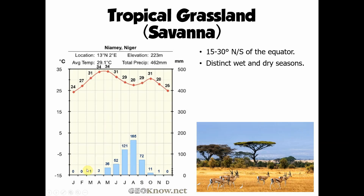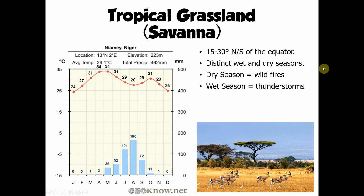Looking at the climate graph for a location in Niger in Central Africa, we can see that in November, December, January, February, March, and April there's almost no rain — a distinct dry season of about five or six months. During those months, wildfires can be quite common because the vegetation dries out and sets alight easily. Then moving into June, July, August, and September, we see rainfall returning — counterbalancing that dry season with a wet season. Unlike rainforests, which are wet all year round, the tropical grassland has this distinct wet and dry season difference.